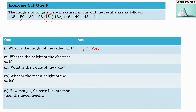Now we find the height of the shortest girl by looking for the lowest observation. Again checking the tens position: 3, 5, 3 — here 2 appears. This is the only observation with 2 at the tens position. So 128 is the lowest observation, and 128 centimeters is the height of the shortest girl.